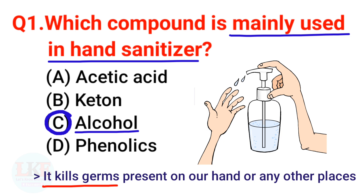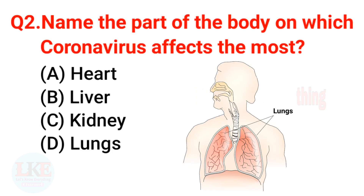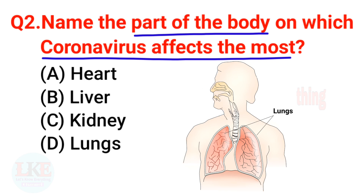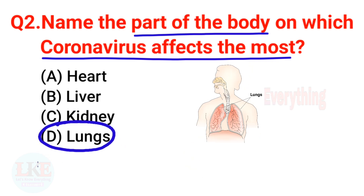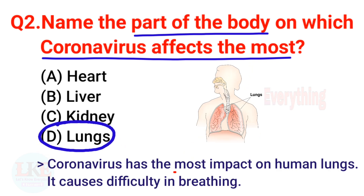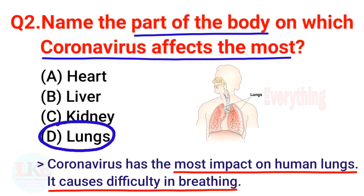Question 2: Name the part of the body on which coronavirus affects the most. Options: A) Heart, B) Liver, C) Kidney, D) Lungs. The right answer is option D — lungs. Coronavirus has the most impact on human lungs; it causes difficulty in breathing.